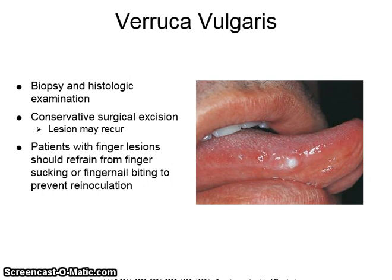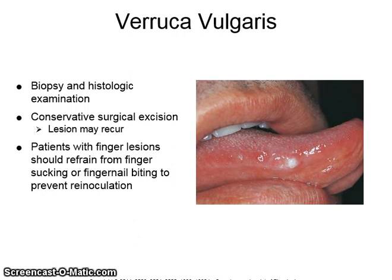Patients with finger lesions should refrain from finger sucking or fingernail biting to prevent re-inoculation. Condyloma acuminatum is a benign papillary lesion caused by a papillomavirus. It is generally transmitted by sexual contact and may be transmitted to the oral cavity through oral-genital contact or self-inoculation. The papillary bulbous pink masses can occur anywhere in the oral mucosa and multiple lesions may be present. They are treated with conservative surgical excision and recurrence is common.